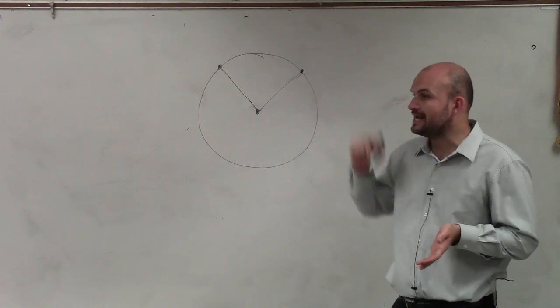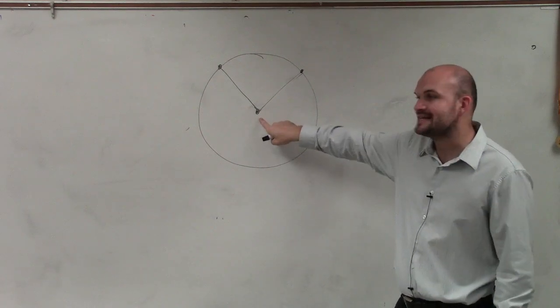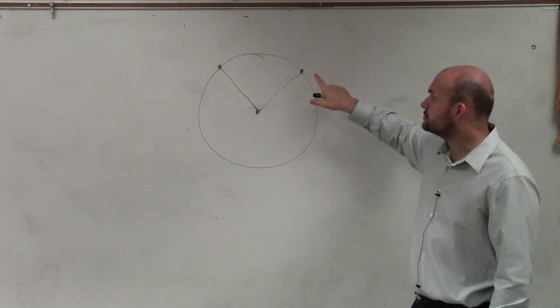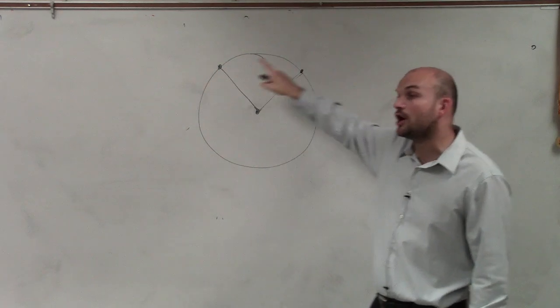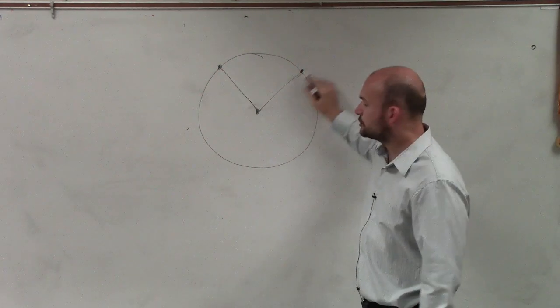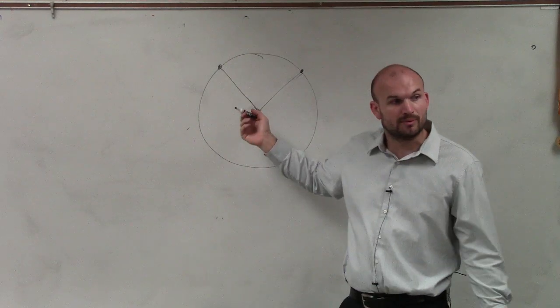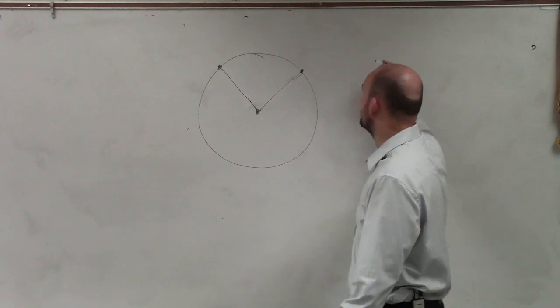So when we have an angle and the vertex is at the center of the circle, the two endpoints of the angle are on the circle, and your two sides that create your angle are what we call radii, then you have a central angle.